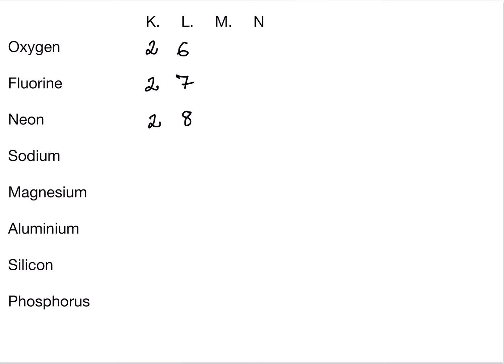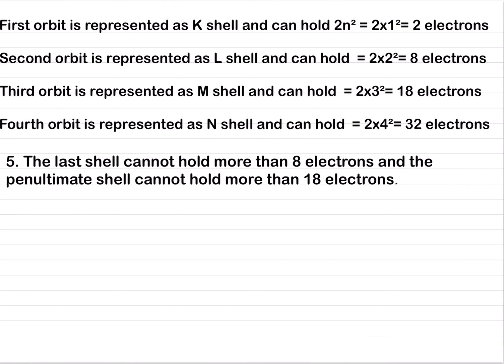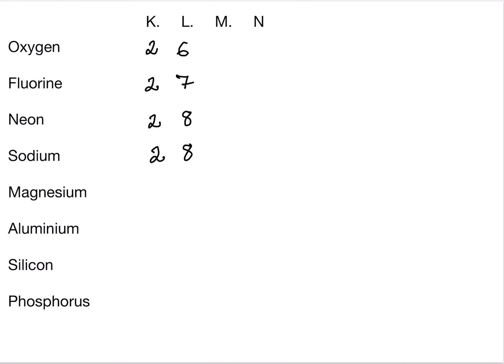Sodium has an atomic number of 11, so 2 electrons in the first shell and 8 electrons in the second shell. We can't put 9 in the second shell because the last shell cannot hold more than 8 electrons — that's the rule. So it's 8, and then 1 in the third shell. Sodium has an electronic configuration of 2, 8, 1.